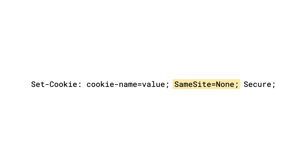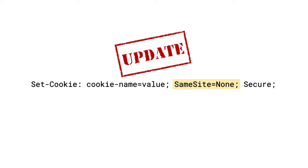Without partitioning, third-party cookies can enable services to track users and join their information from across many unrelated top-level sites. This is known as cross-site tracking. You can identify third-party cookies by their SameSite=None value. Once Chrome starts limiting access to third-party cookies by default, any cookies that contain SameSite=None will require updates.